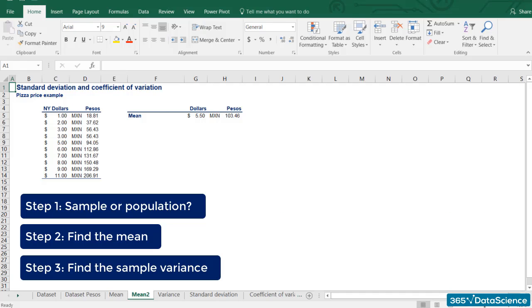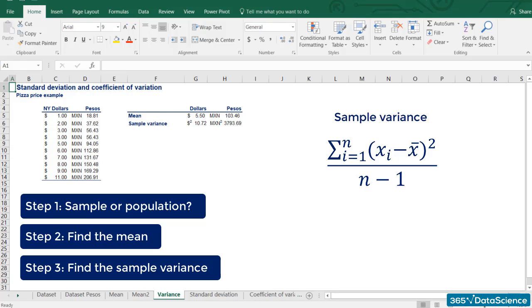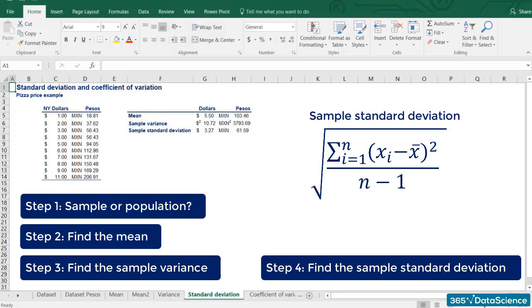The third step of the process is finding the sample variance. Following the formula that we showed earlier, we can obtain $10.72 squared and 3,793.69 pesos squared. The respective sample standard deviations are $3.27 and 61.59 pesos.